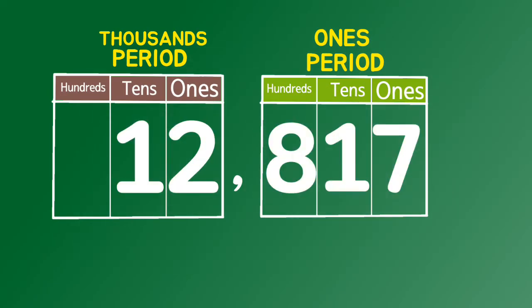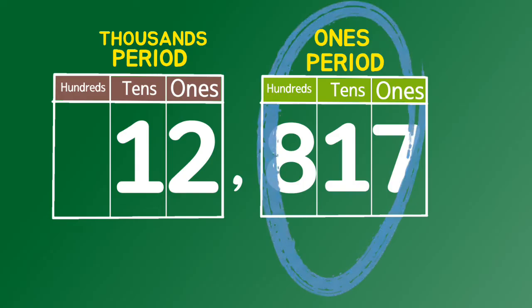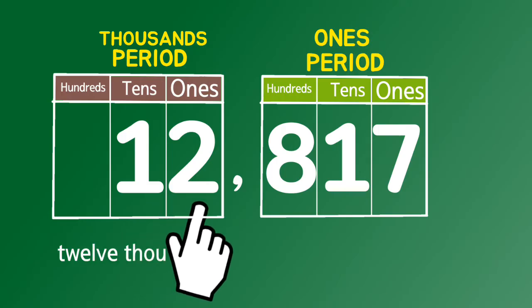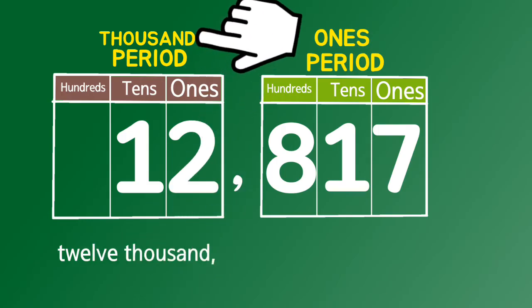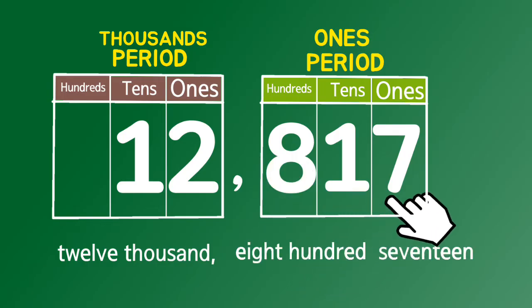So how do we read this? Remember, number plus period. Except, in one's period, there's no need to read the period. Twelve thousand, comma, eight hundred seventeen.